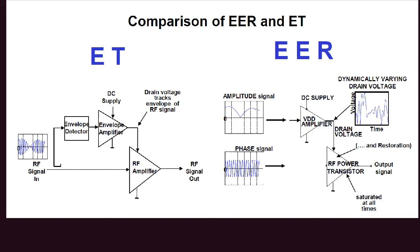In principle, envelope tracking and envelope elimination and restoration EER belong to a category of power amplifier or transmitter architectures in which the input signal is modified in a way so that we get high efficiency. In envelope tracking, the envelope is extracted from the input RF signal and used to modulate the supply of the RF power amplifier, while the exact signal is fed into the gate of the amplifier. This gives high back-off efficiency, which is needed because modern signals have high peak-to-average power ratio.